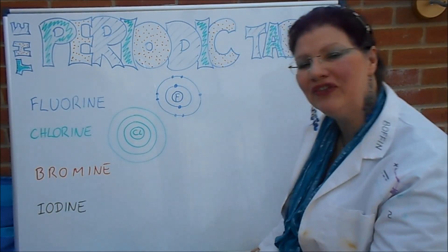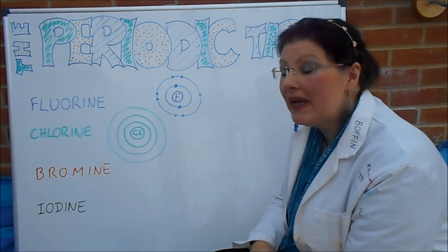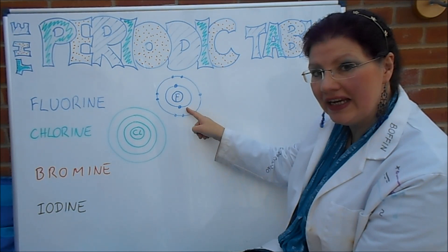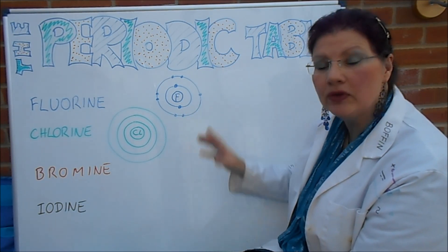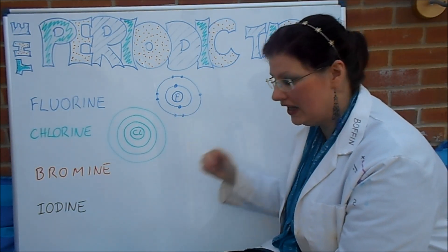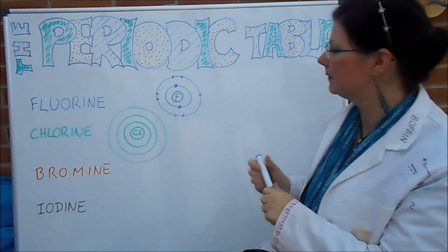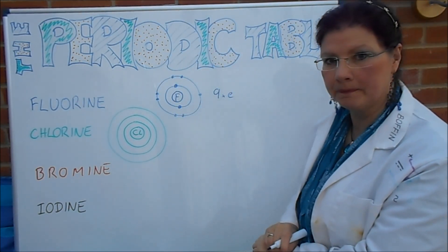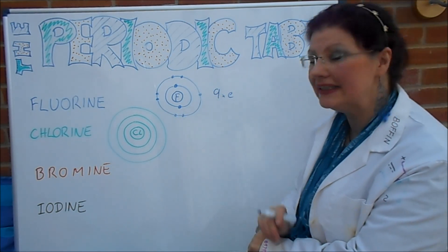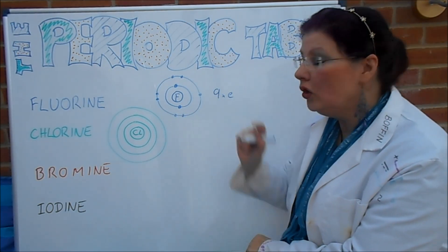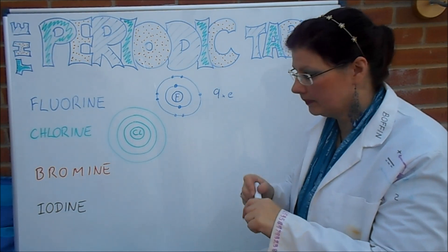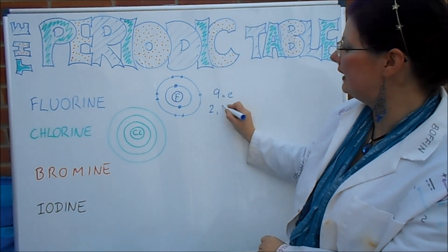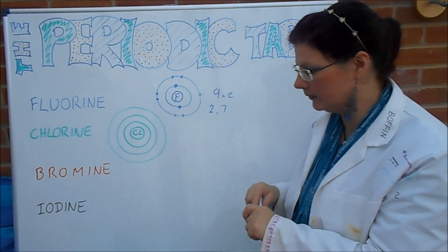So here is the first thing for you to do. I'd like you to get some pen and paper, please. Copy down this one. Two electrons on the inner ring, and then the next ring out makes it up to the total of nine. I'll just put that on here. So that's nine electrons. You need nine in there, two and seven.